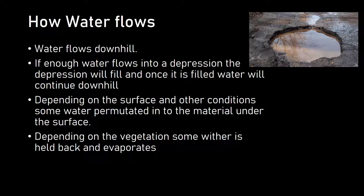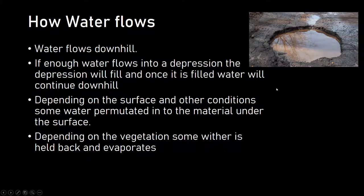Some first assumptions: water flows downhill. In this case, water flows downhill and then into a depression. As this depression fills up, the water level will rise and at some point the water will continue its way downhill. There are also other things to take into consideration. Depending on the surface — if it is a sealed surface, the water will just continue. If it's a semi-permeable surface, some of the water will seep into the material underneath the top layer. And if there's vegetation, vegetation can hold back some of the water and allow it to evaporate through the vegetation.